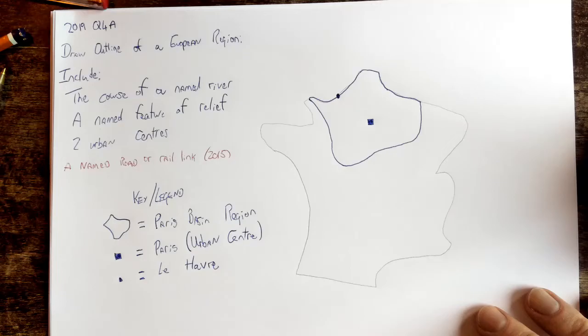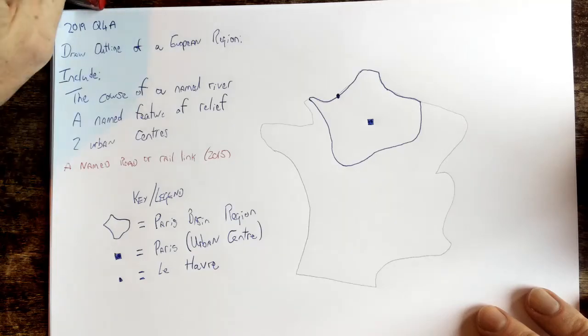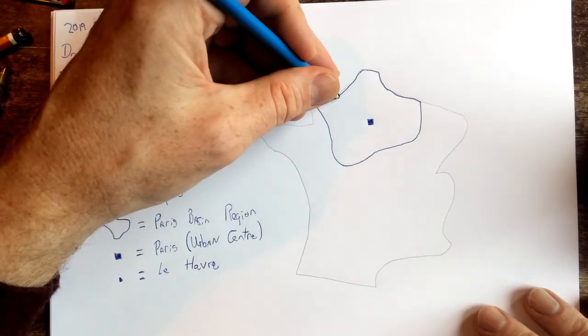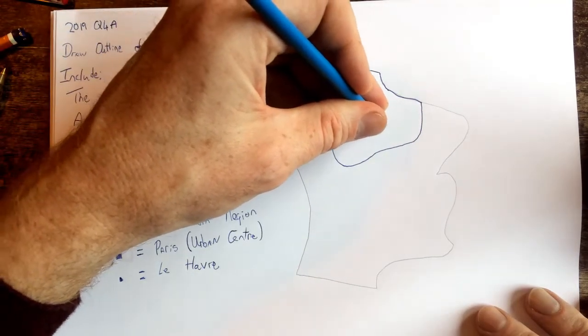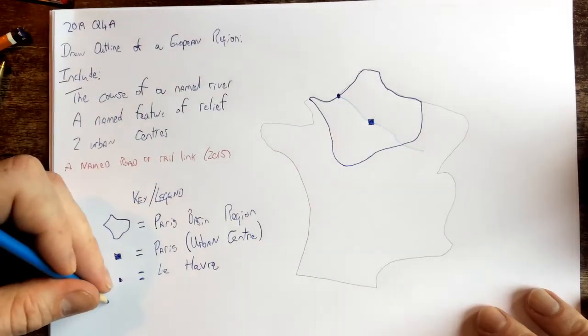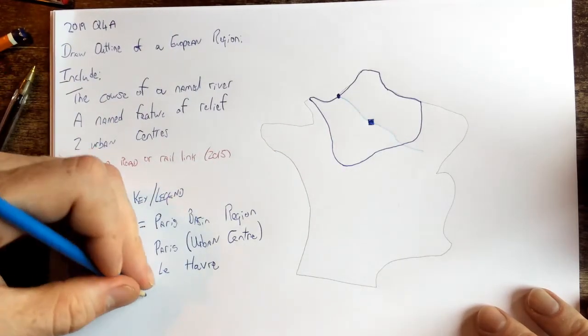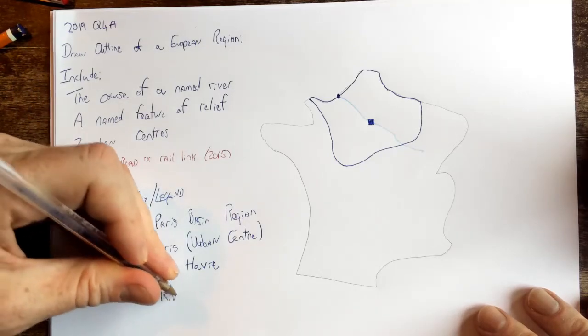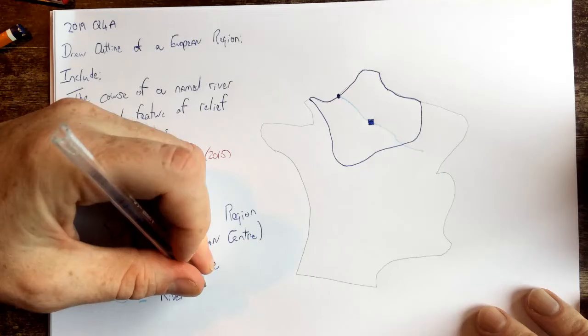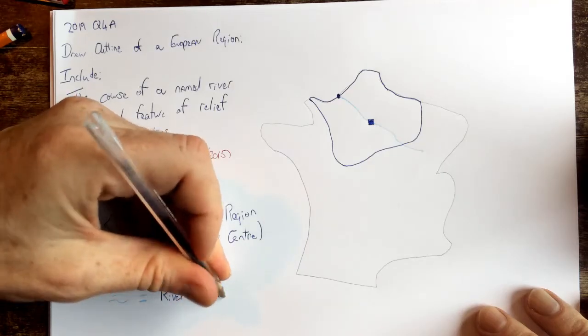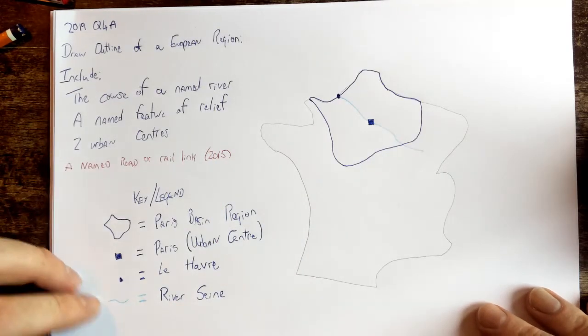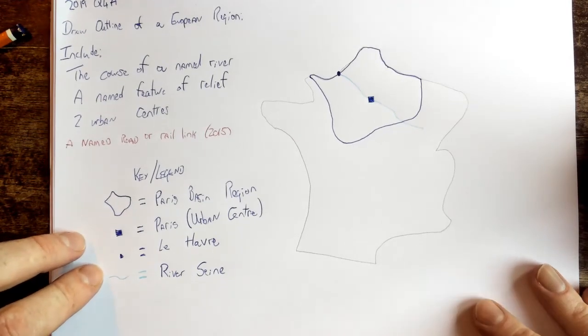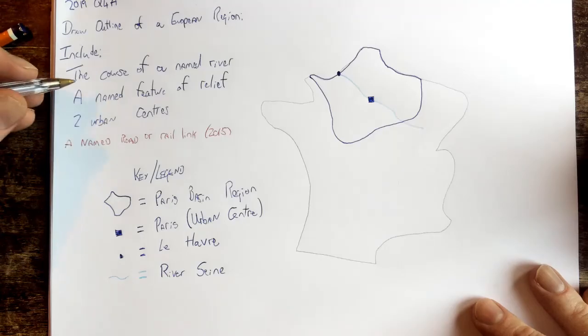So I'll draw next my River Seine, looks something like that. And we'll draw a symbol and we'll say that equals River Seine. Okay, so we have the River Seine, so now I have the course of a named river done.